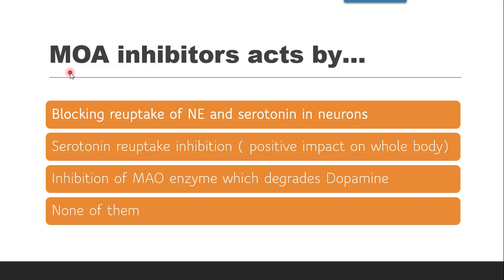Next question: MAO inhibitors act by — blocking reuptake of norepinephrine and serotonin, serotonin reuptake inhibition, inhibition of MAO enzyme which degrades dopamine, or none of them? As the name monoamino oxidase inhibitor suggests, the correct answer is inhibition of the MAO enzyme which degrades dopamine.